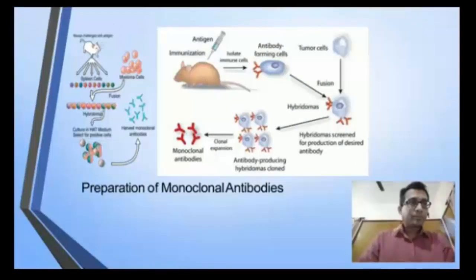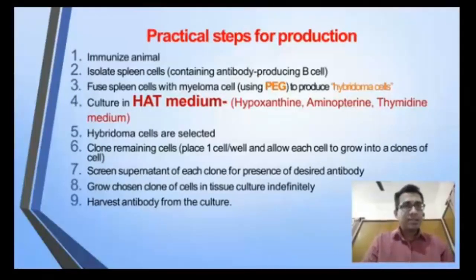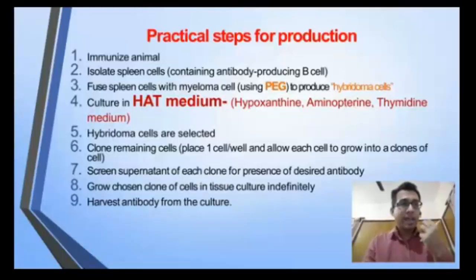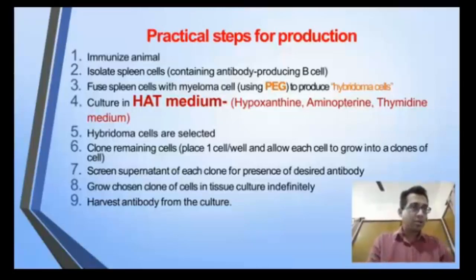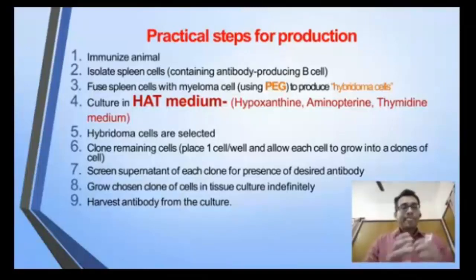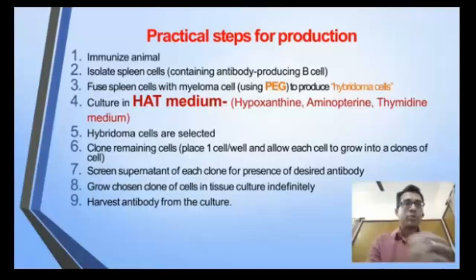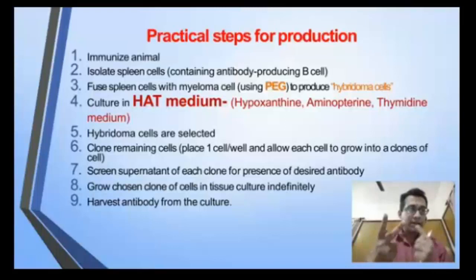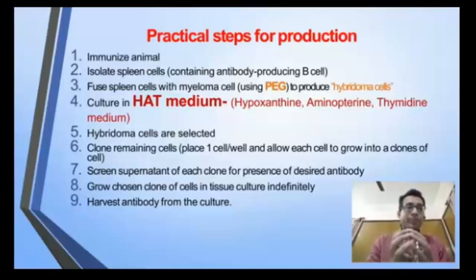The steps briefly are: immunize the animal, isolate spleen cells to get specific antibody-producing B cells, fuse them with myeloma cells using PEG to produce hybridoma cells. After fusion you can get three types of cells: unfused B cells, unfused myeloma cells, and hybridoma cells. You need to select only the hybridoma cells.